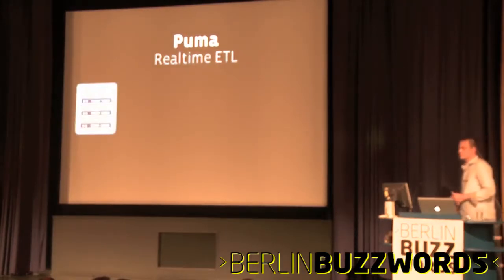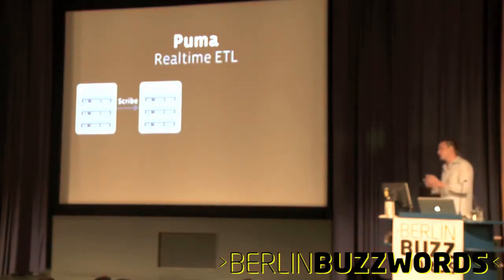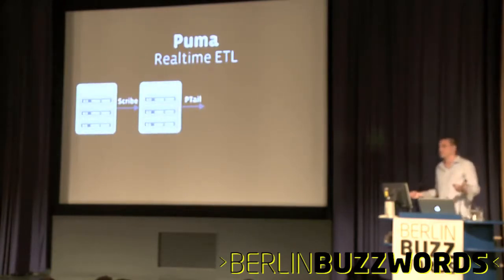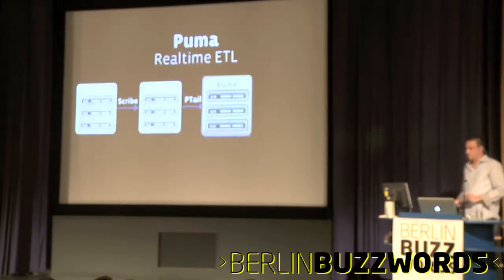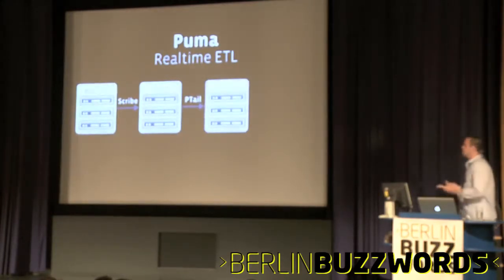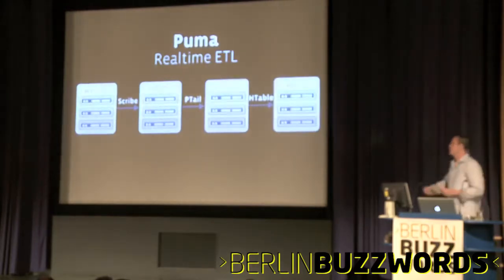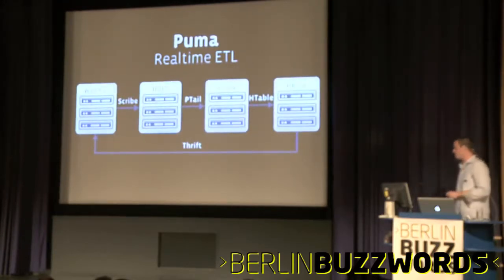So Puma is what I call real-time ETL. We still have the web tier, we still have Scribe, and we're still writing into HDFS. But now we're utilizing the sync append so that we can actually write to a file and then people can read from it at the same time through something we have called ptail. Ptail is basically a tail for HDFS files that are being written to — it deals with a lot of sharding and things like that. Puma takes a log line, does something to it, does HBase operations, and that goes into HBase. All the front-end reads just go through our Thrift interface. This pipeline is about 10 to 30 seconds — obviously a massively different, game-changing kind of thing for the products we can build on top of it.